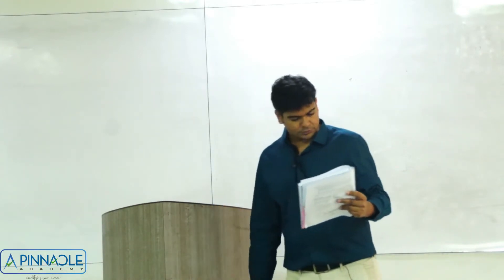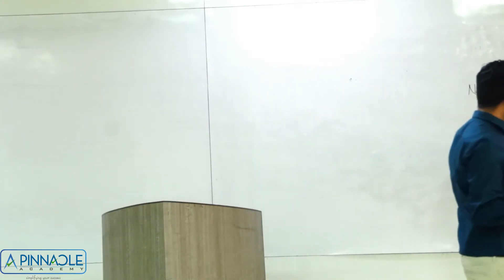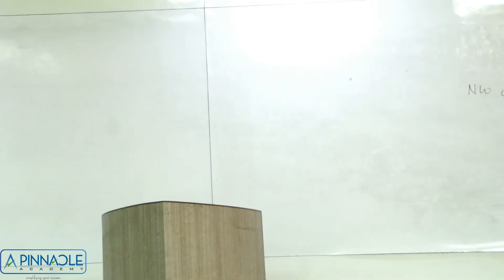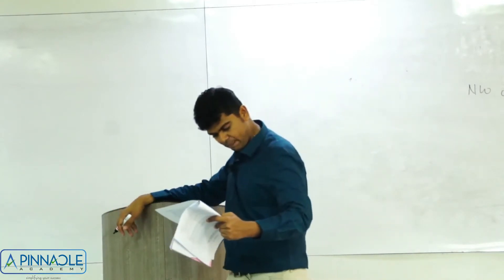For Company C Limited: net worth on 31st March 2014 is 450 crores, on 31st March 2015 it is 475 crores, and on 31st March 2016 it is still below 500 crores. Since it does not cross 500 crores, it will not be covered in Phase 1. It will be covered in Phase 2.